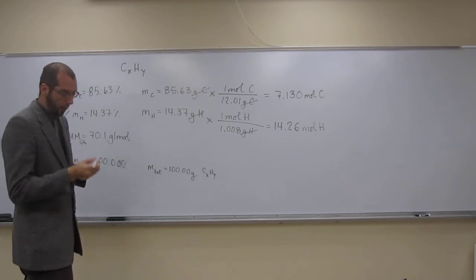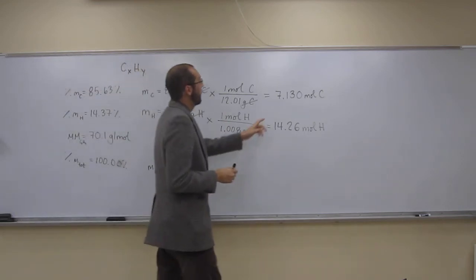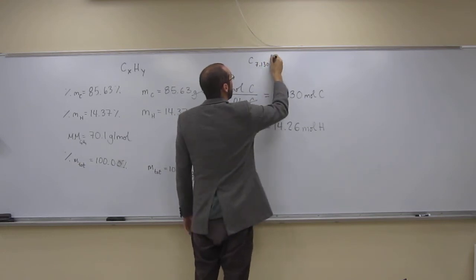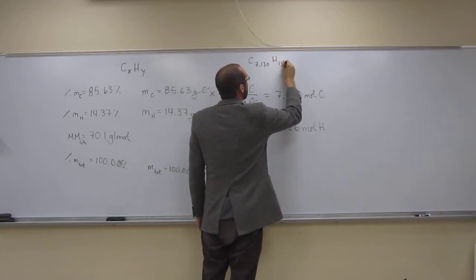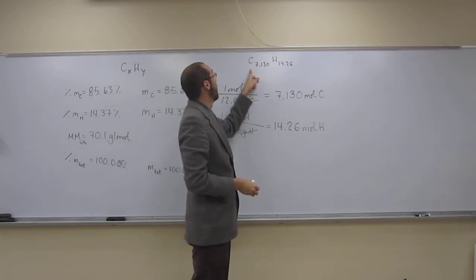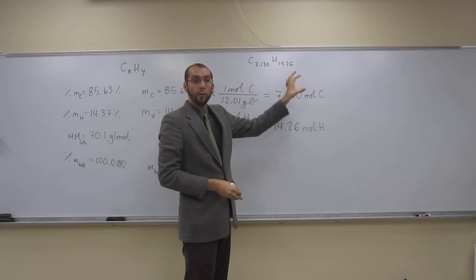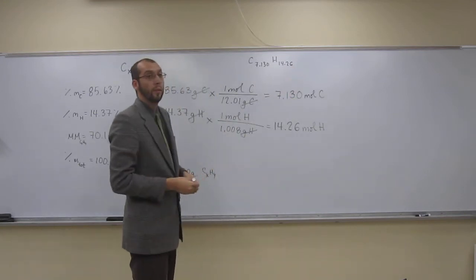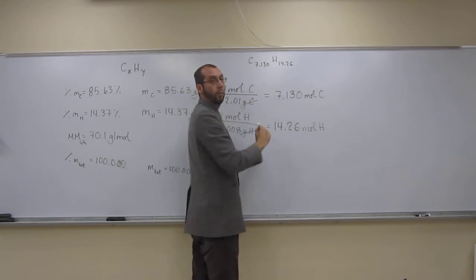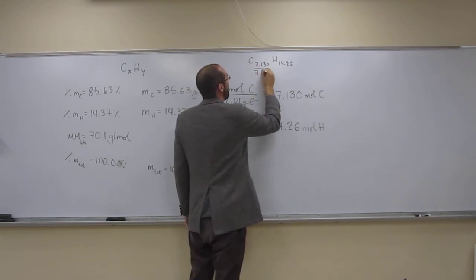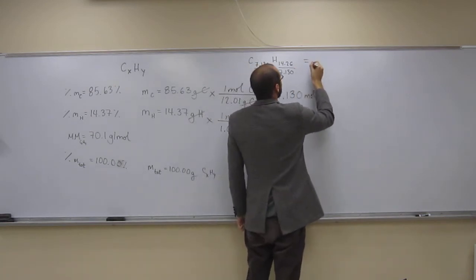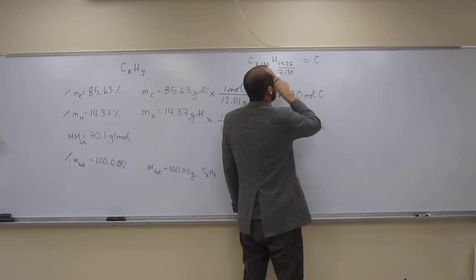So, now we've got moles and moles. We can say C 7.130 moles, H 14.26. So, hopefully, that looks weird to you, right? Because you don't normally see molecular formulas having decimal points. They're usually integers. So, what we're going to have to do is divide both of these by the smallest number. Which is smaller, 7.130 or 14.26? 7.130. So, this is going to give us the empirical formula, provided we get integers here.